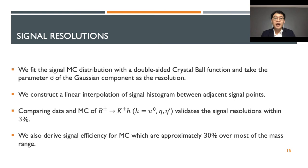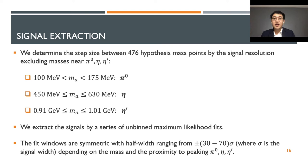We then scan the diphoton invariant mass spectrum with the step size equal to the signal resolution we determined earlier. There are a total of 476 hypothesis mass points, including the masses near the pion, eta, and eta-prime. Then we extract the signal by a series of unbinned maximum likelihood fits over smooth background where the fit windows are symmetric and the length of the window are in range of 30 to 70 times the signal width, which is determined from the Monte Carlo. The window fit varies depending on the axion mass and whether or not it is in the proximity of the meson resonance peaking.